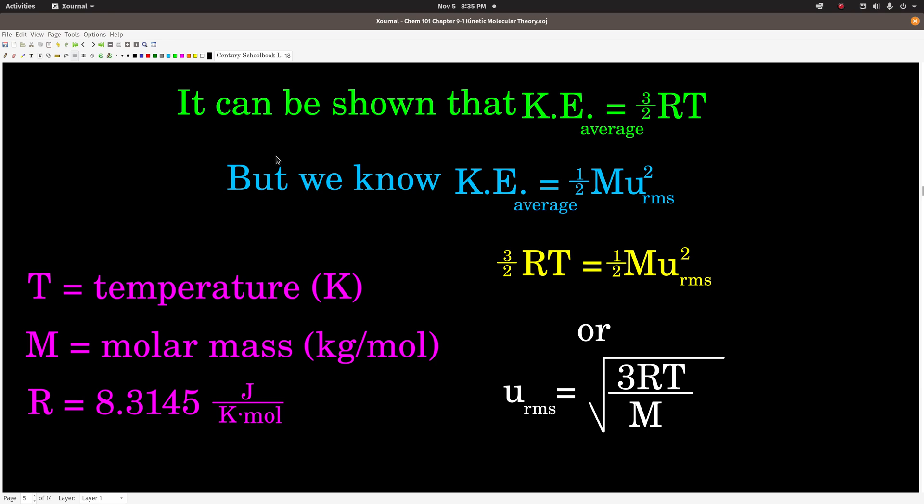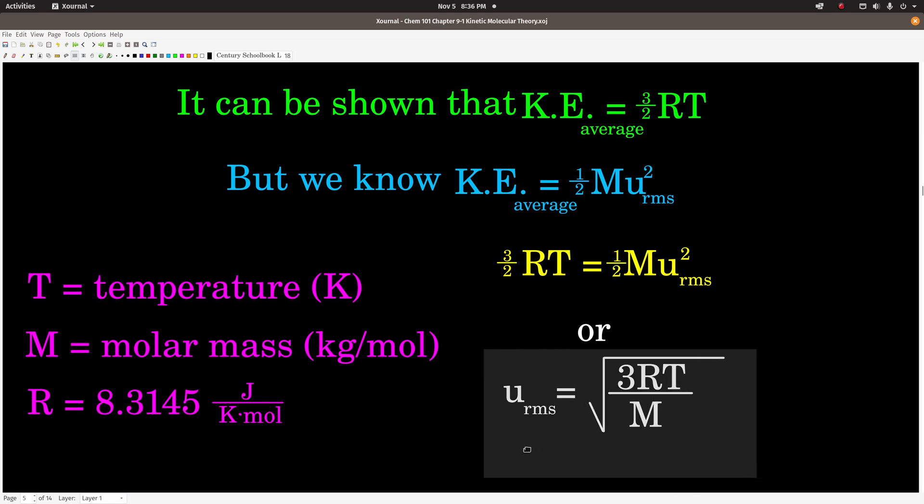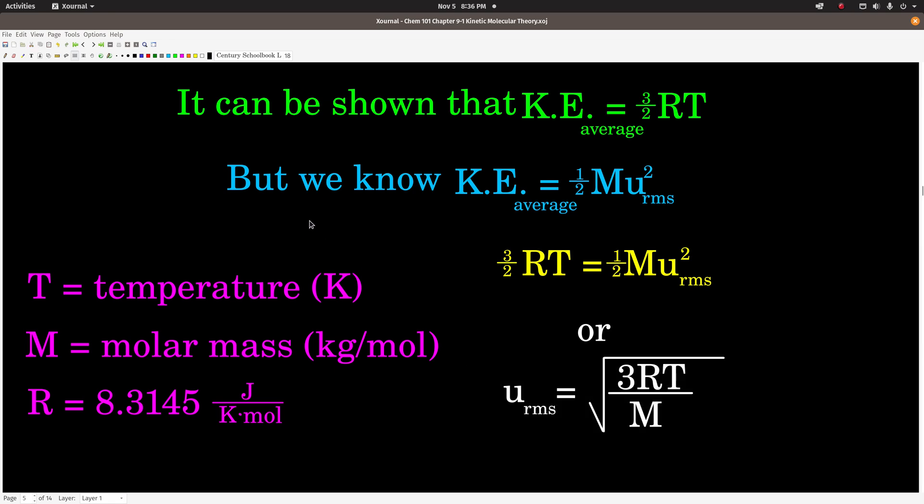Now it ends up that it can be shown that the average kinetic energy of a gas is also equal to three-halves RT. That derivation is beyond the scope of this class but it can be shown. So for one mole of an ideal gas, the average kinetic energy is equal to three-halves RT, where R is the gas constant in units of joules per Kelvin mole, which gives it a value of 8.3145, T is the temperature in Kelvin. So we know two expressions for the average kinetic energy of a mole of ideal gas. If we set them equal to each other, which is what we're doing right here, and then rearrange this to solve for the root mean square speed, so basically divide through by one-half molar mass, take the square root, we get this. So this equation here guys, this is what you're going to use, one of the equations you're going to use. Everything up to this point was just an explanation of where this equation comes from.